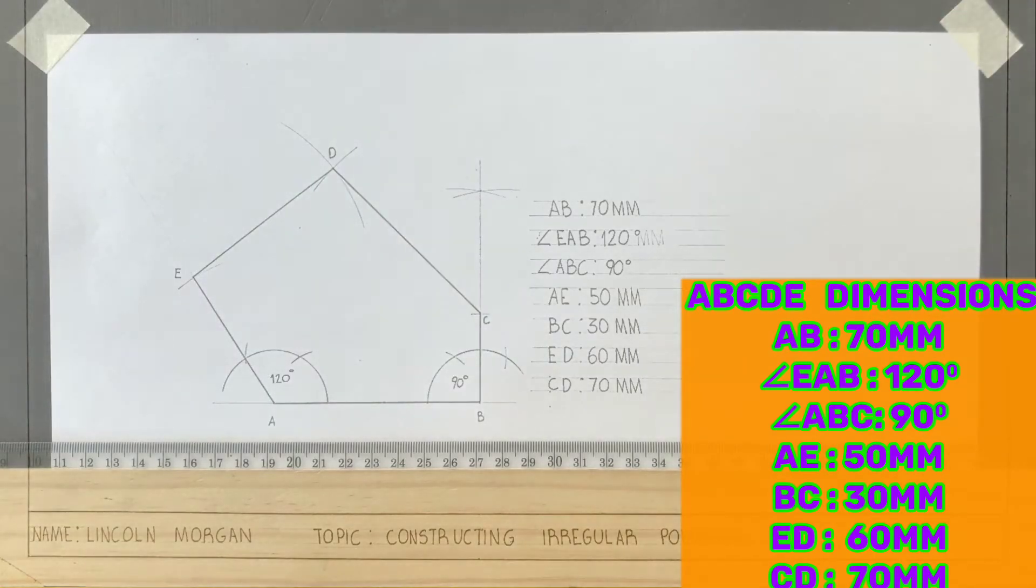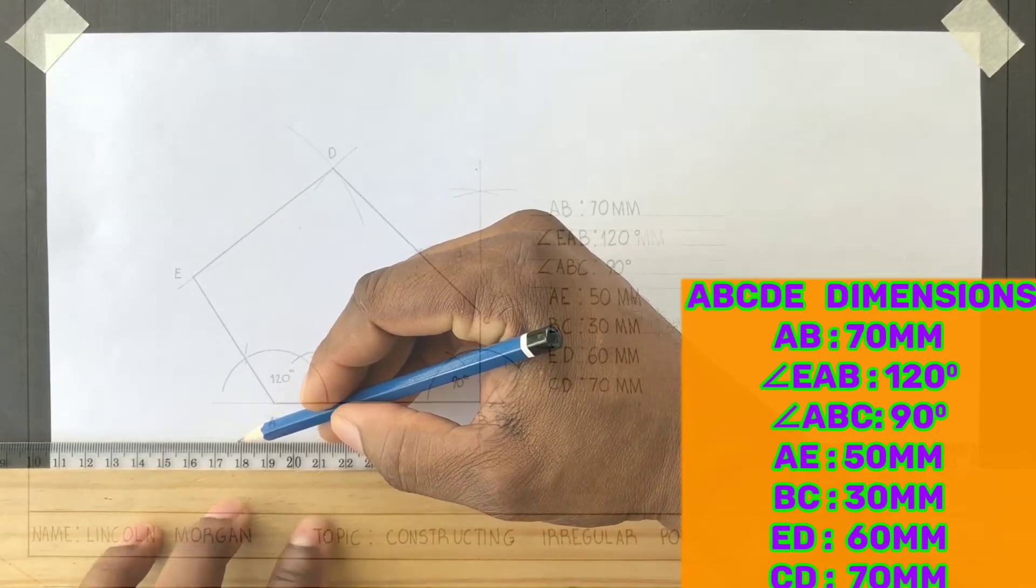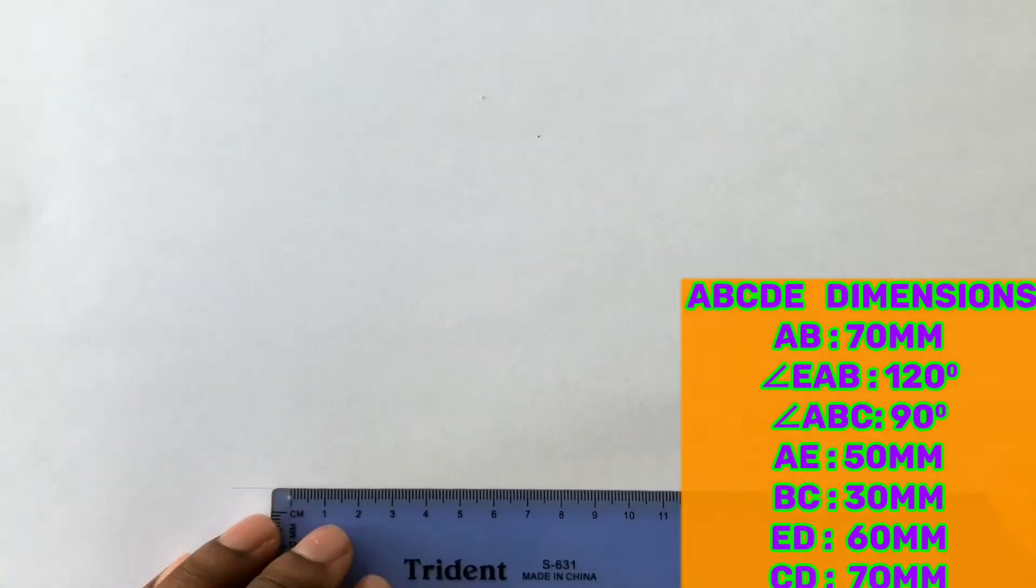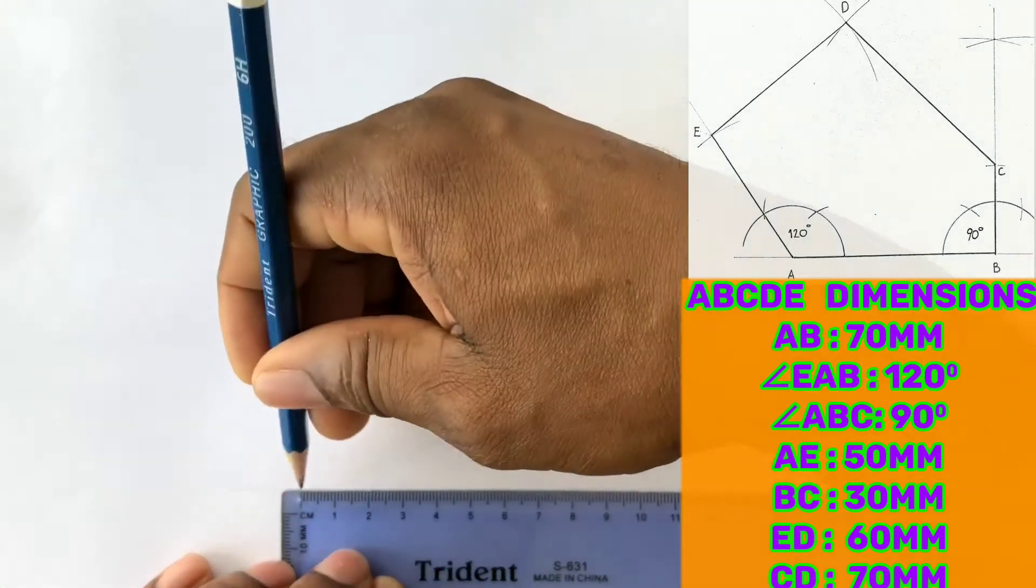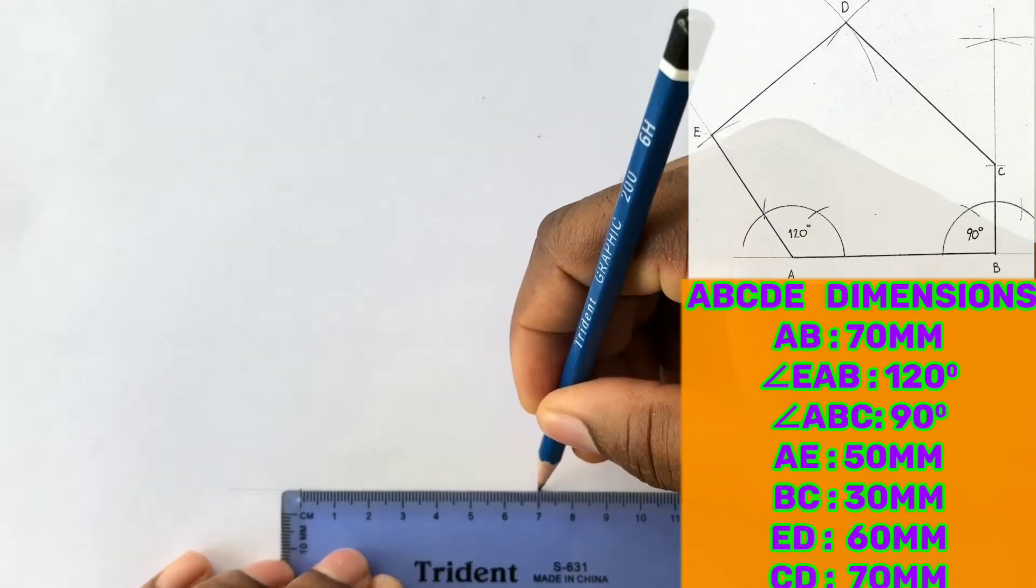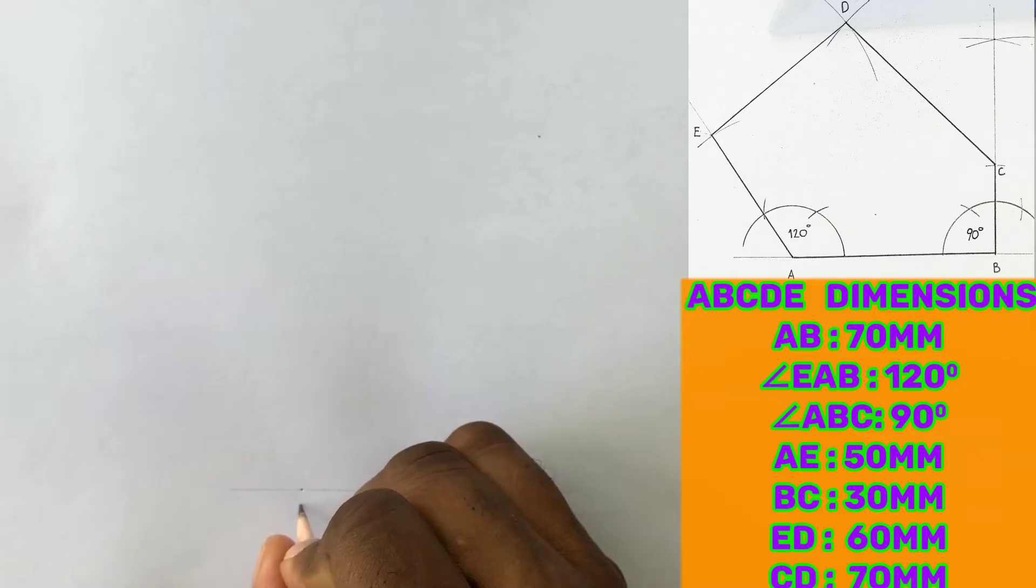To the given dimensions, draw your irregular polygon. You will first draw a horizontal construction line and identify 70 millimeters on this line. Label the points A and B.